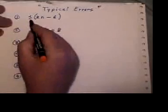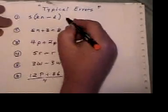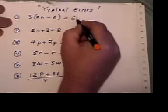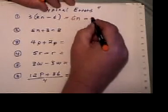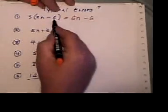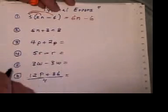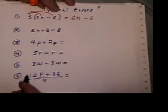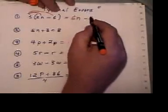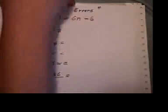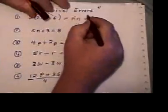The first error is when they do 3 times 2n, they give 6n, they write down minus 6 at the end. They forget that 3 has to go times that, and 3 has to go times that. So that's the error right there.